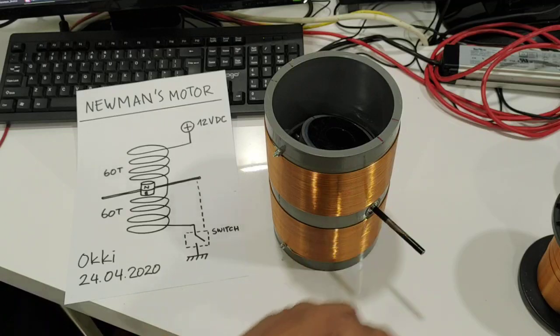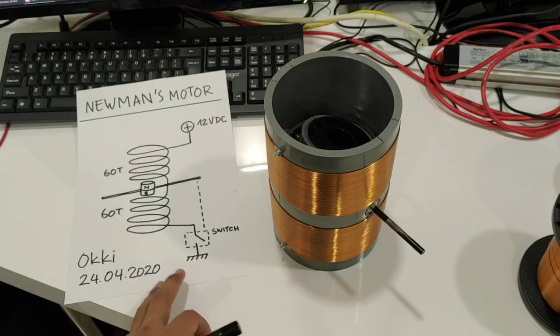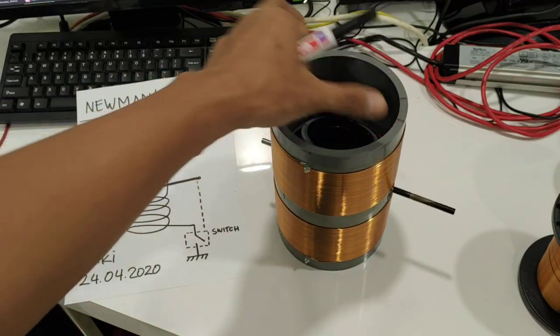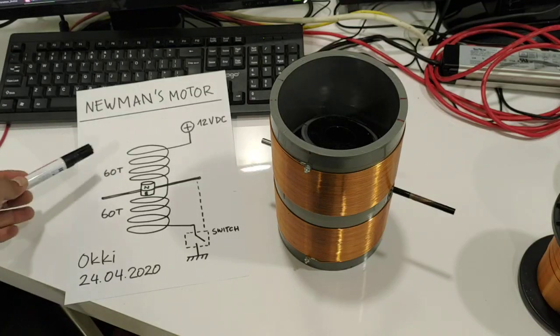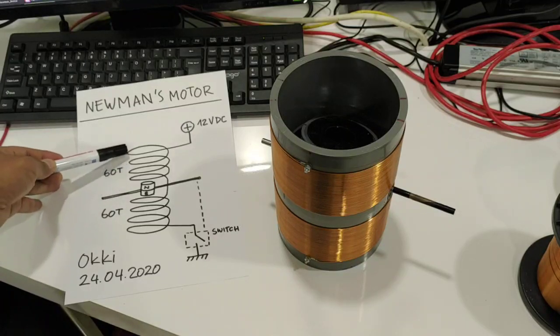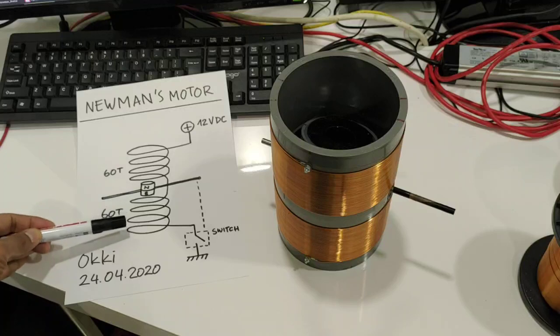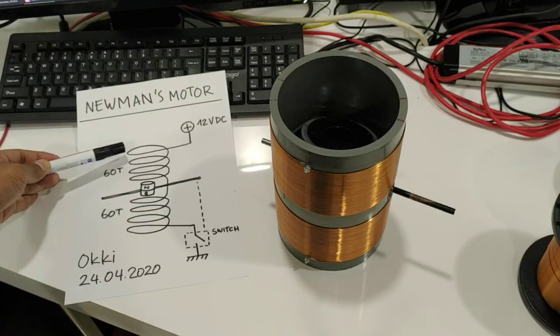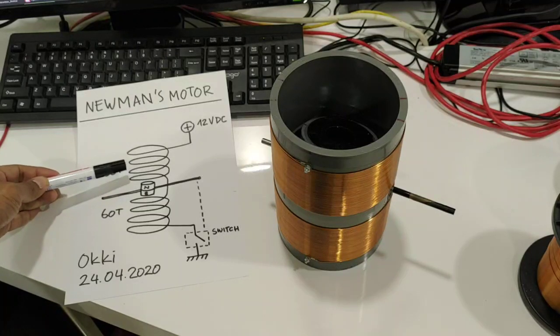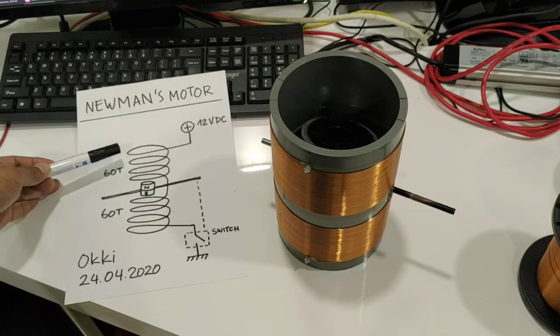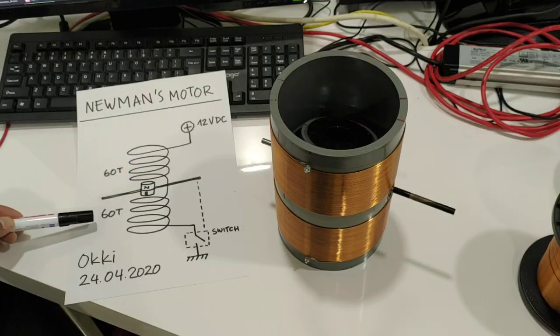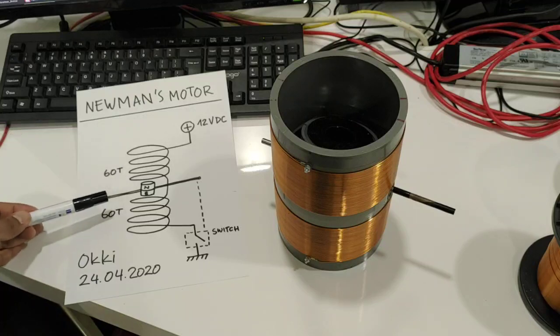You can use the shaft as a switch and you don't need any electronic components. What I have here is a coil. This coil consists of two coils actually. The upper part has 60 turns and the lower part also has 60 turns. This is only one layer coil, just like a Tesla coil.